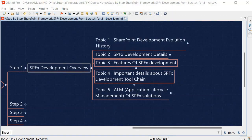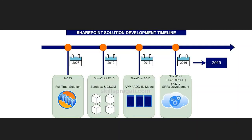To understand the development evolution history we need to look into this diagram. If you closely look into the diagram, it will give you an idea about how SharePoint custom development evolved through the years. In the year 2007, the SharePoint product was known as Microsoft Office SharePoint Server, called MOSS.